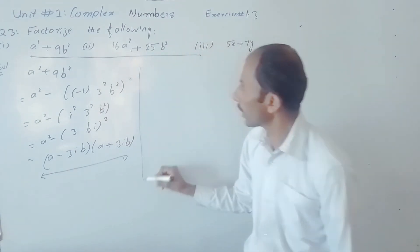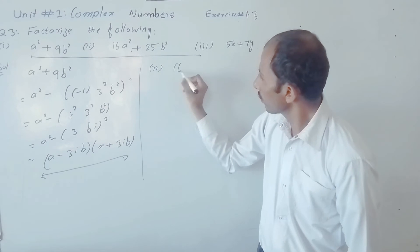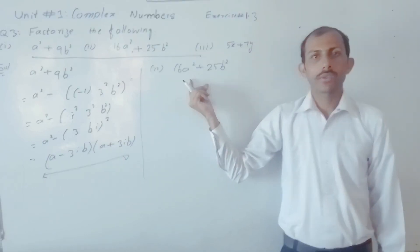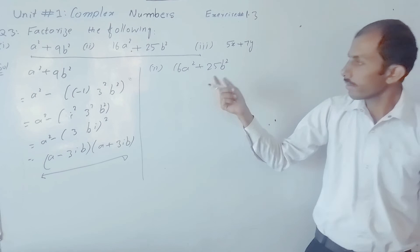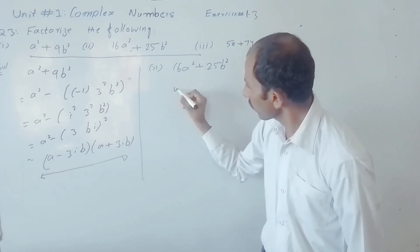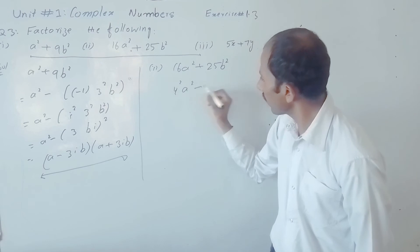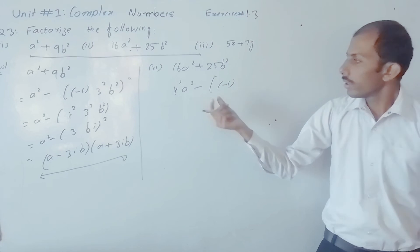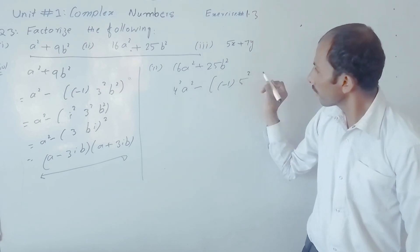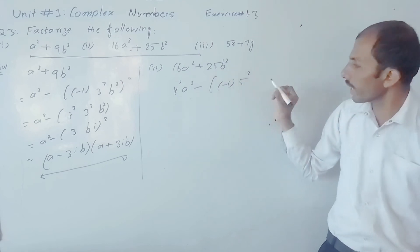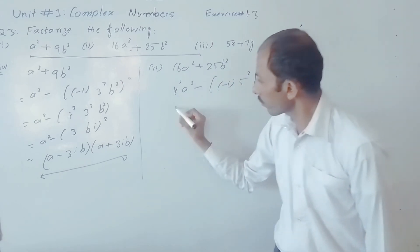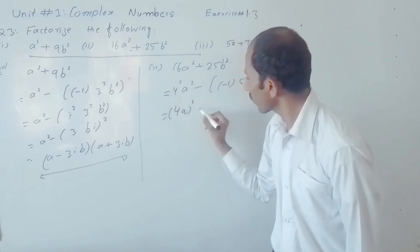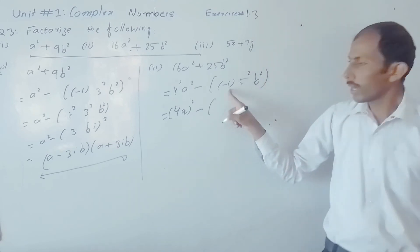Next, part number two: 16a² + 25b². Now 16 is the square of 4, so we write 4²a², minus into minus 1 can also be written in this form. And 5² equals 25, so we have 5²b². Next, (4a)² whole square and (4a)² whole square minus (−1).